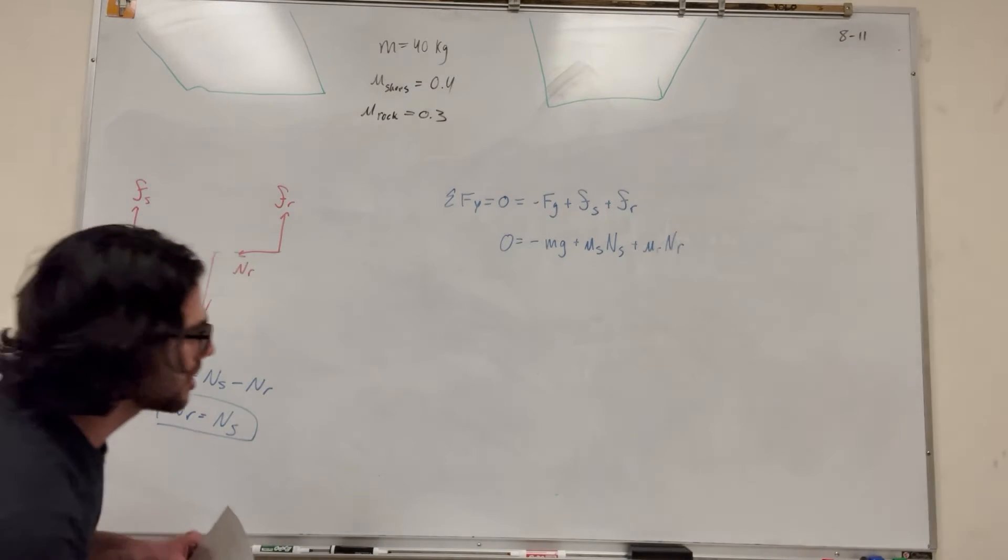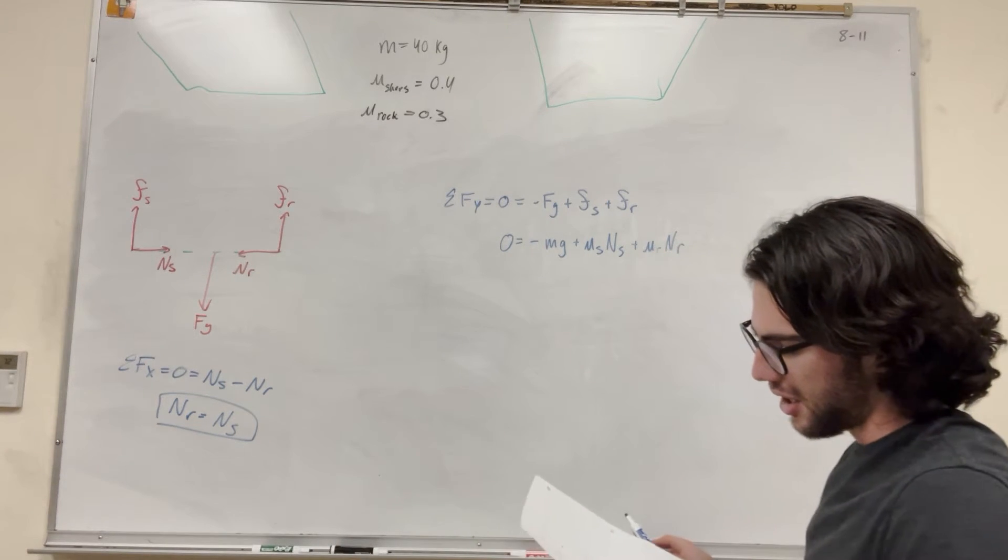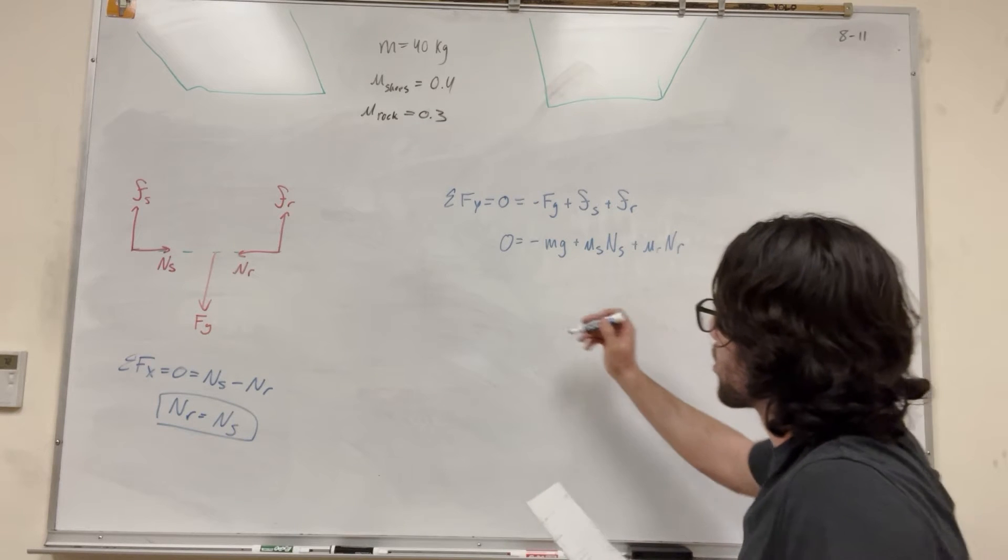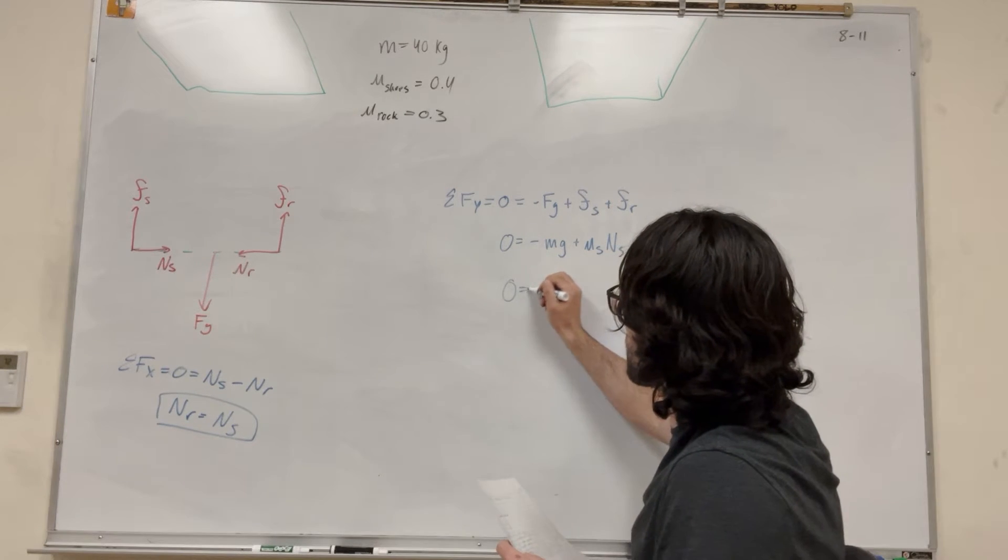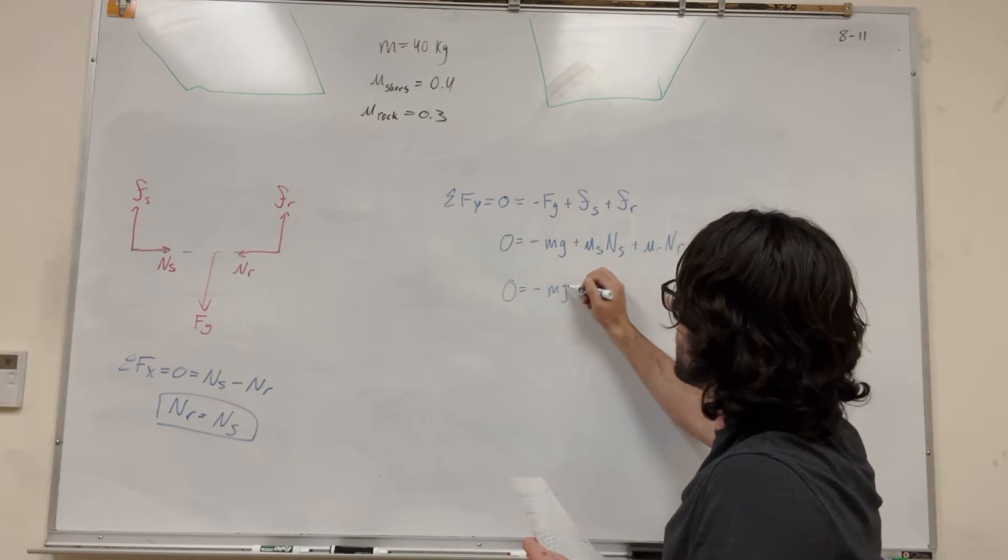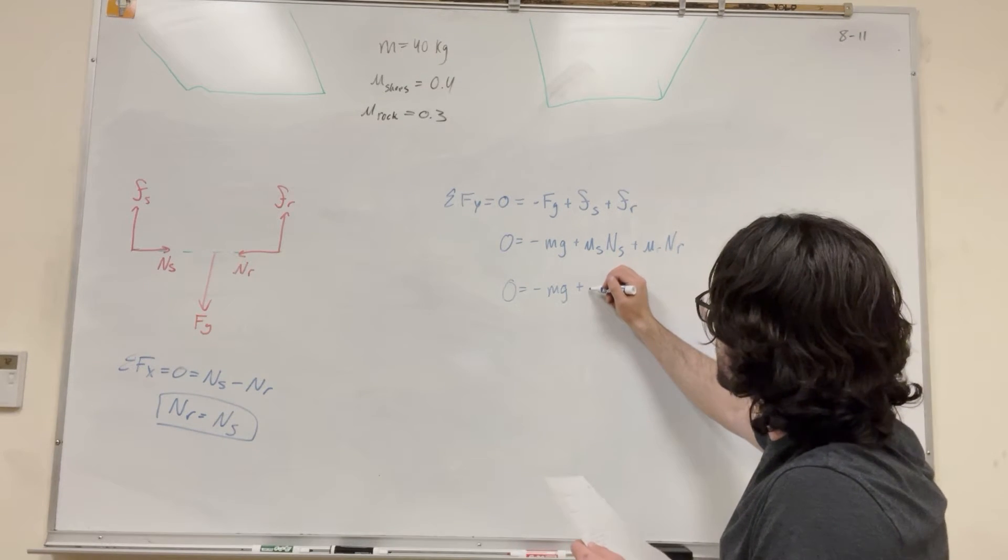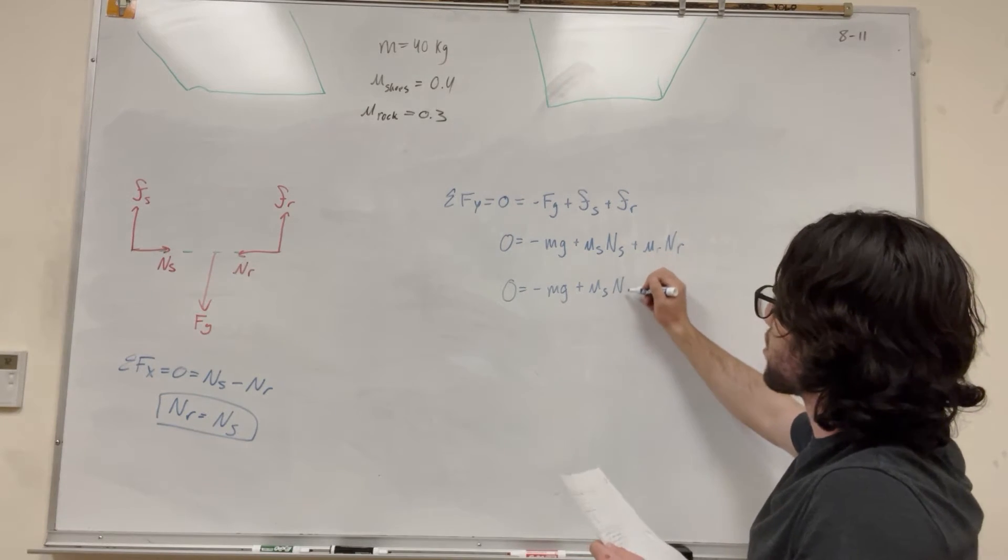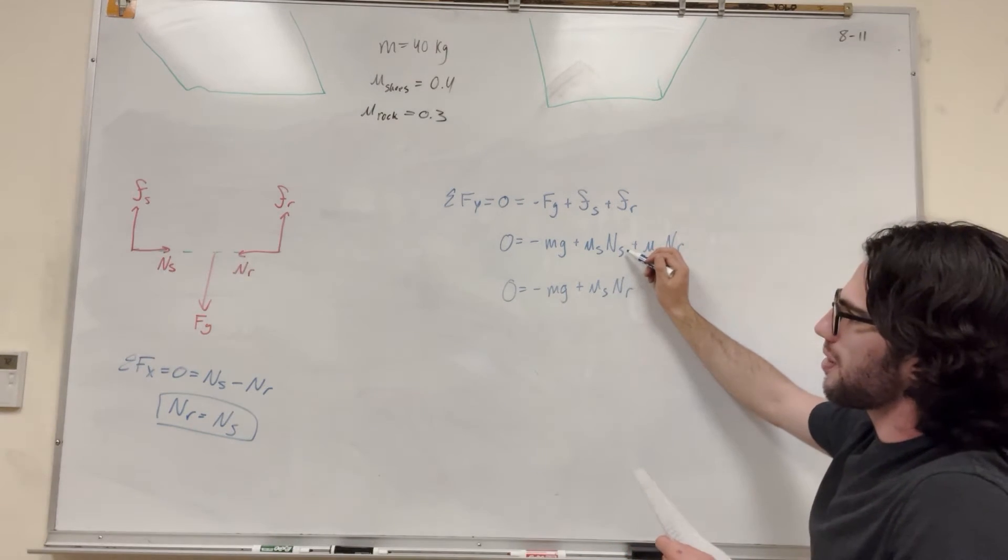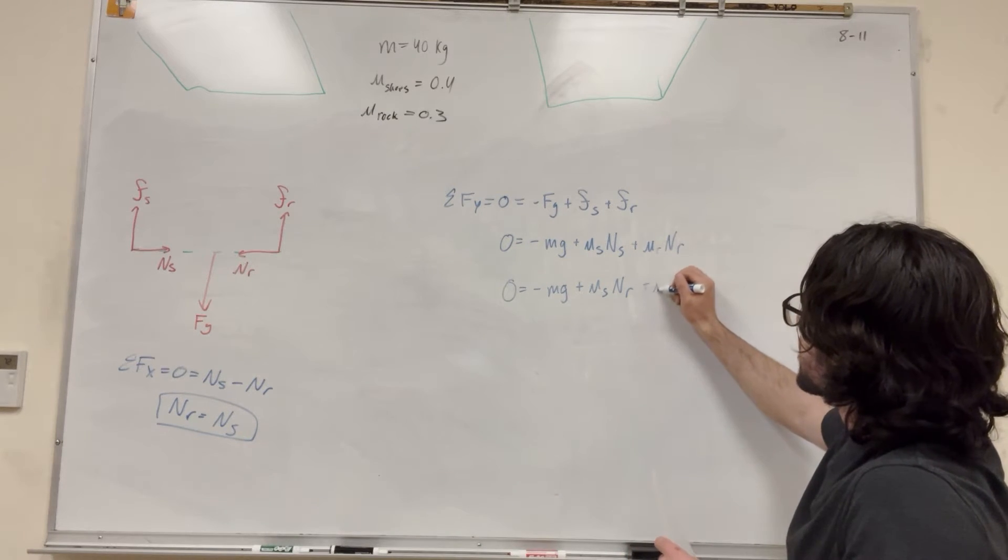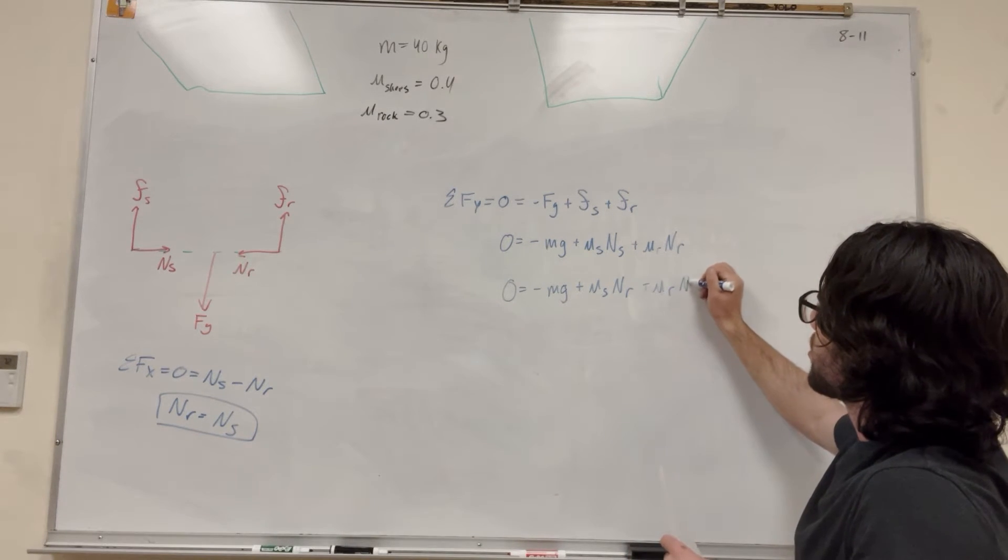So we can use this over here just to simplify this equation even more. Let's go ahead and get rid of the normal of the shoes and just replace it with the normal of the rock. So zero is equal to negative mass times gravity. Plus, so we're getting rid of the normal of the shoes. So it'll be static friction of the shoes, normal of the rock. So we replace the normal from the shoes to the normal of the rock because we know that they're equal to each other. Plus the coefficient of static friction of the rock, normal of the rock.